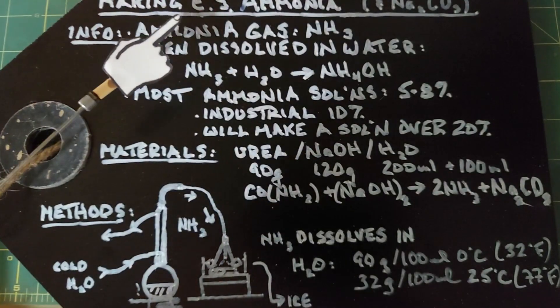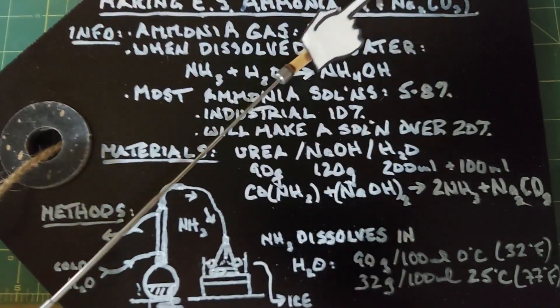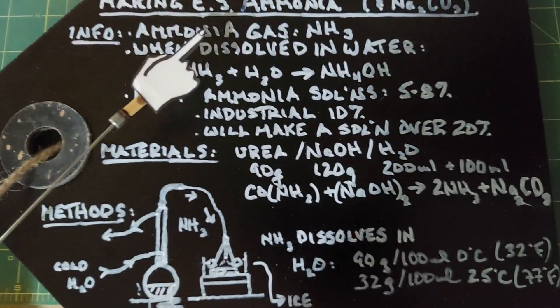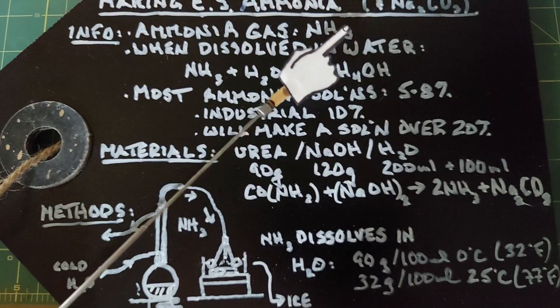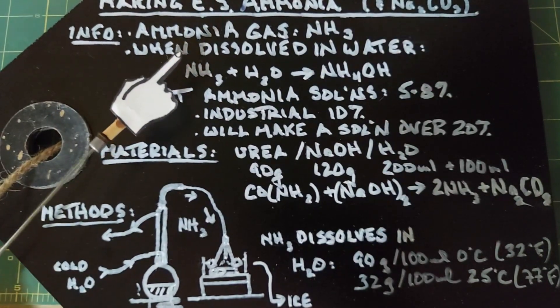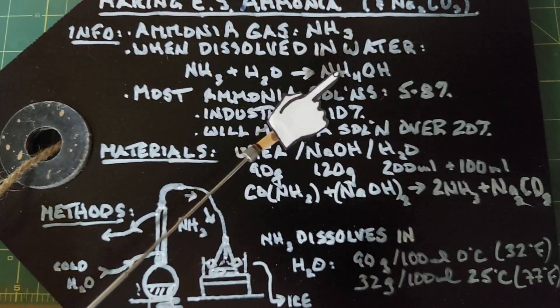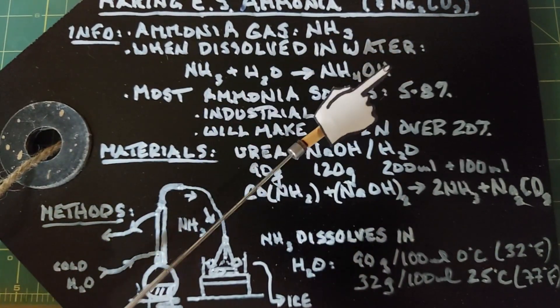In this video we're going to be making extra strength ammonia and as a byproduct some sodium carbonate. Ammonia gas is written as NH3. It dissolves really well in water, and when dissolved in water you have NH3 plus H2O giving you NH4OH.